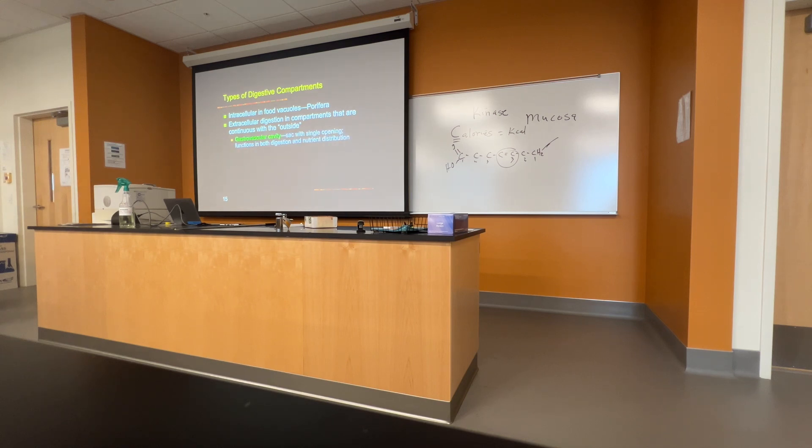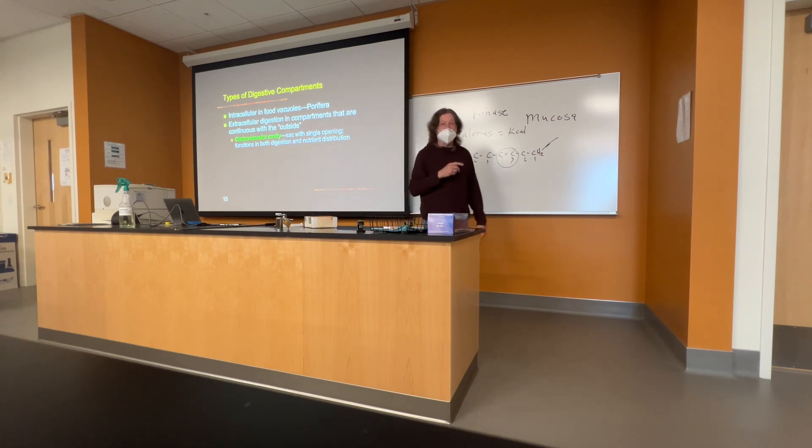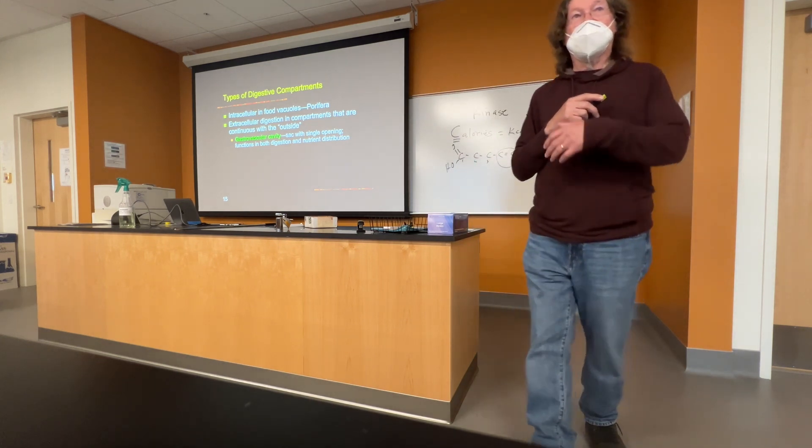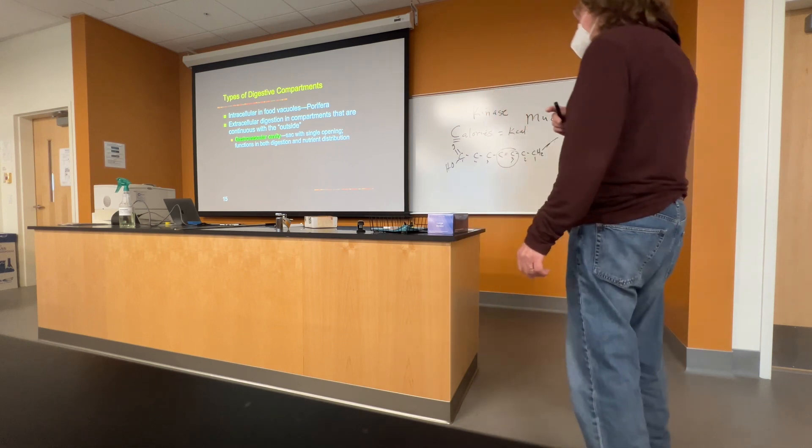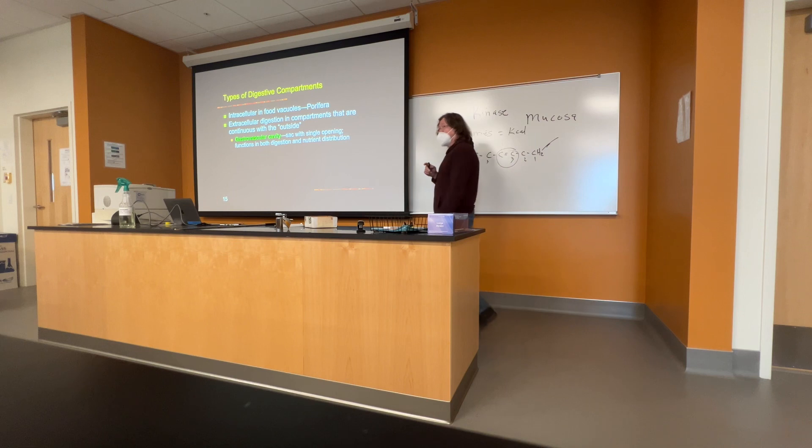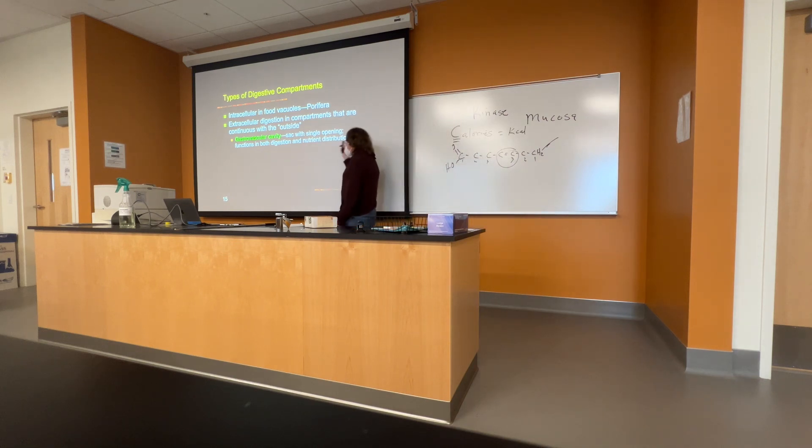So some animals that we have covered, platyhelminthes, cnidaria, they have a gastrovascular cavity. So this is where things are digested and any sort of non-digestible material is then ejected through the very same opening. And so this gastrovascular cavity functions both as a digested area, and once the nutrients are broken down into the basic building blocks and it can be distributed throughout the body.